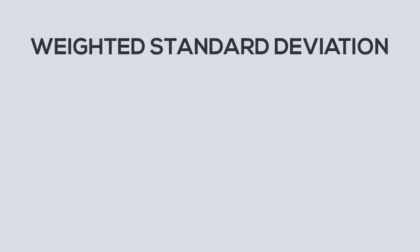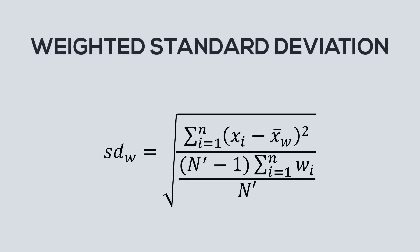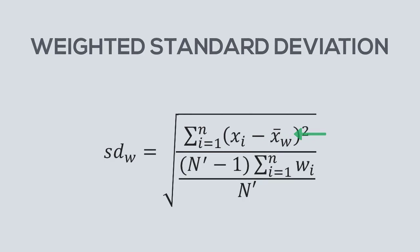A weighted standard deviation is a means of calculating the standard deviation where not all of the observations have the same weight, and this formula is what we will use to calculate it. So w is the weight of each observation, x is the value of the observation, x bar w is the weighted average, and n prime is the number of non-zero observations.